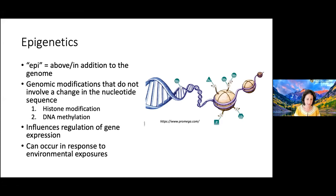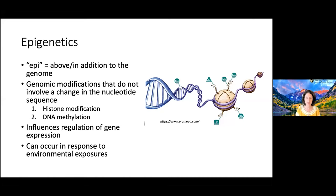DNA methylation is a type of epigenetic effect. 'Epi' refers to 'above or in addition to the genome.' These are genomic modifications that do not involve a change in the nucleotide sequence, but they do involve changes — here you can see modifications to histones or modifications to the nucleotide sequence. The effects can either upregulate or downregulate gene expression, which is why they're interesting to study. They're both stable in that they're heritable, but also very dynamic, and they can occur in response to environmental exposures.